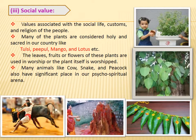The third value is social value, which is the most important value connected with the social life, customs, and religions of people. In Hindu religion, many plants like tulsi, peepal, mango, and lotus are considered to be sacred and holy. Our lord Ganesha is always found under the peepal tree, and mango leaves are always found at our doorstep on auspicious occasions. Lotus is always offered to our favorite gods. Many animals like cow, snake, and peacock also have a significant place in our psycho-spiritual arena.